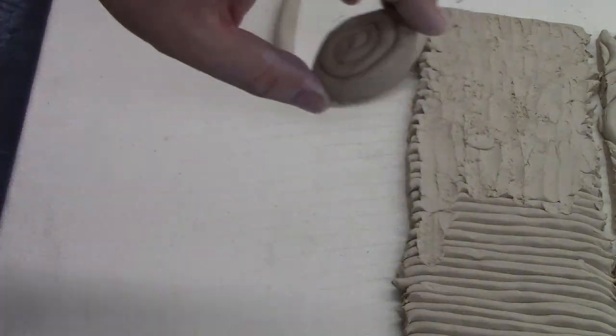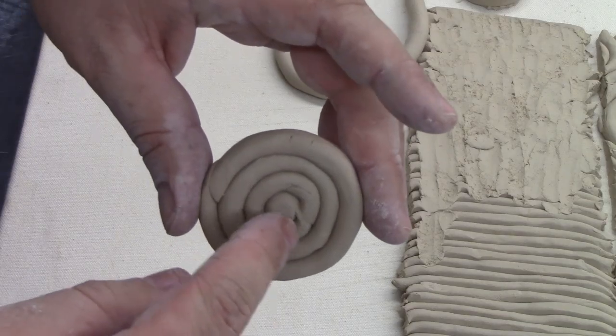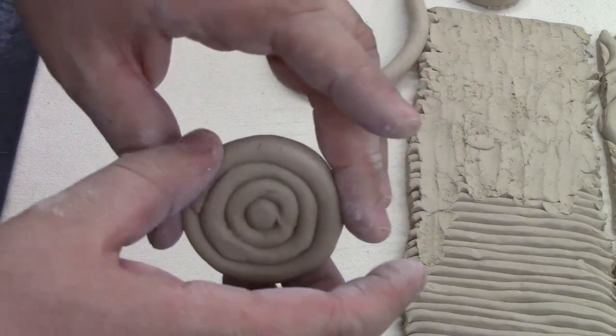Besides the spiral, you can also make a target. You just start with a ball and you make rings going around it, then attach those and smooth out the back.